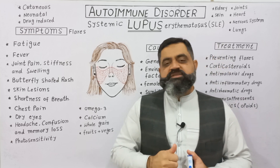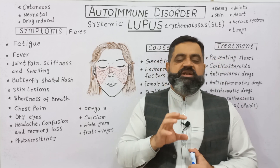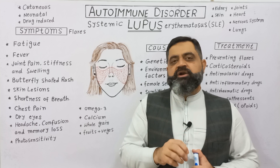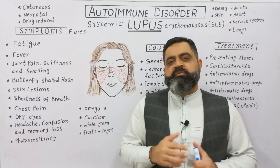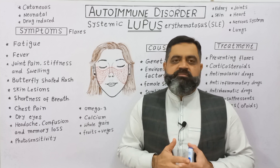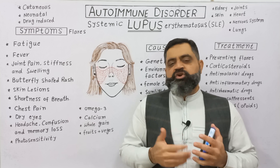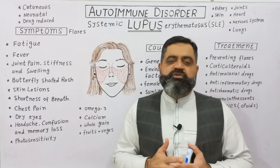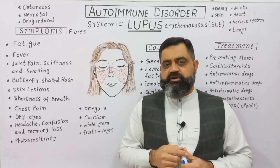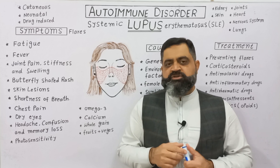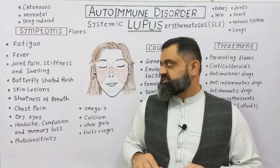This disease mimics other diseases, so it is very hard to distinguish. Most of the time the patient feels they do not have lupus but thinks there is another kind of disease, so that is why it becomes too late to treat the disease.